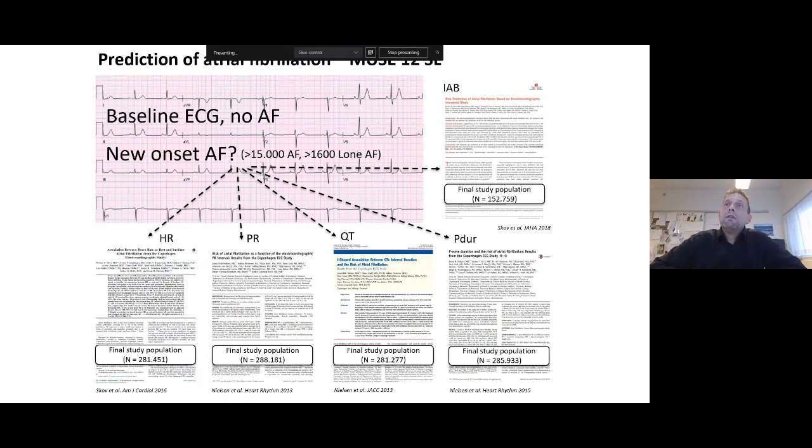So for example, using the ECG database and the Danish health registries, we've examined the association between different ECG measurements and new onset atrial fibrillation. So here you can see that we looked at heart rate, the PR interval, the QT interval, the duration of the P wave, and also the presence of interatrial block, IAB. And all of those measurements come directly from the 12 SL measurements in MUSE.